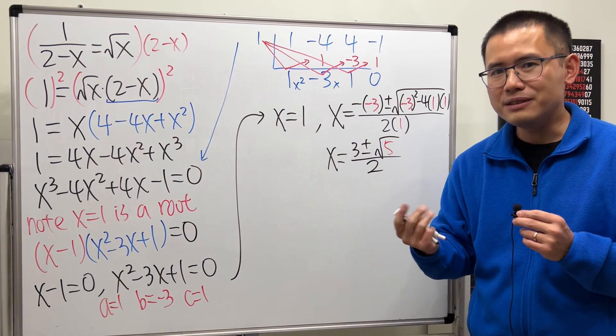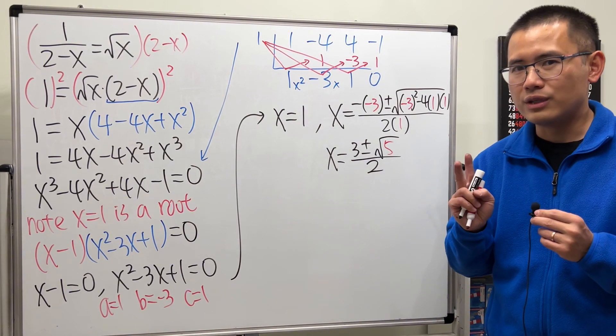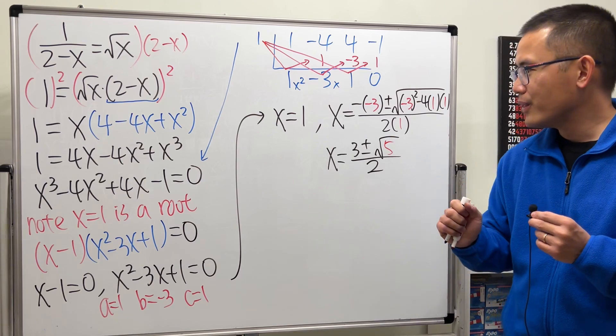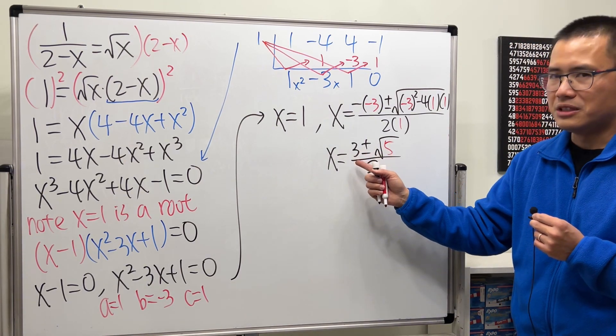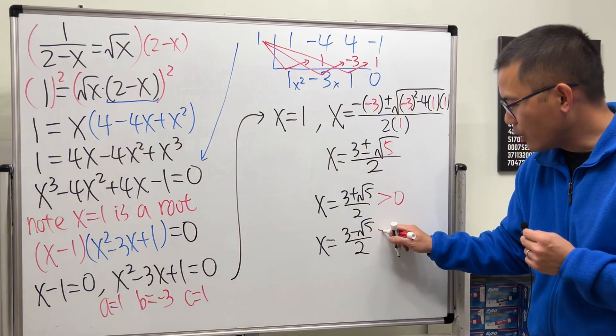It looks like we have three answers, but we actually have just two. Which two though? The square root of 5 is actually less than 3. So this is also positive.